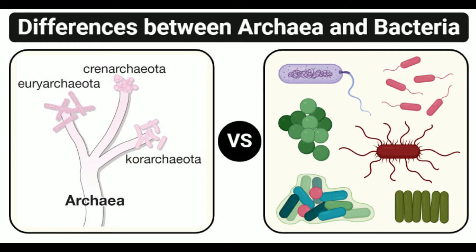Flagella: Archaeal flagella, also termed archaella, are synthesized by adding subunits at the base. Bacterial flagella are hollow and are assembled by adding subunits moving from the central pore towards the tip of the flagella.